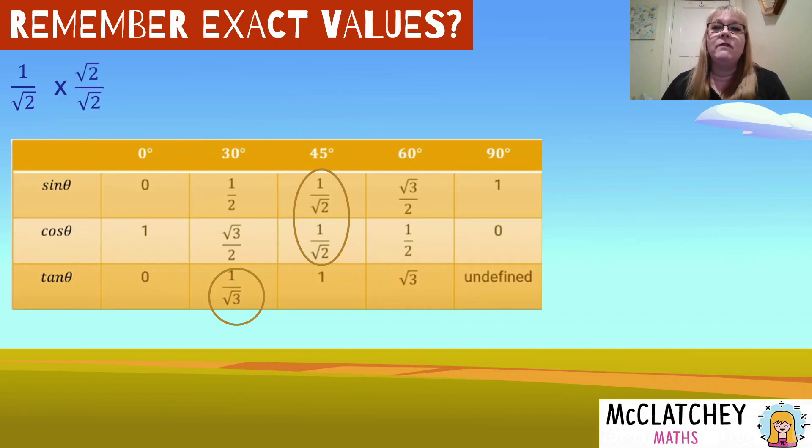So firstly, we're going to take one over root two. If we multiply that by the denominator root two over root two, which is basically multiplying it by one in the form of root two over root two, when we multiply two fractions we multiply the tops and then the bottoms. So one times root two gives me root two, square root of two times square root of two is just two. Now we have a rational denominator and we can replace that in our table.